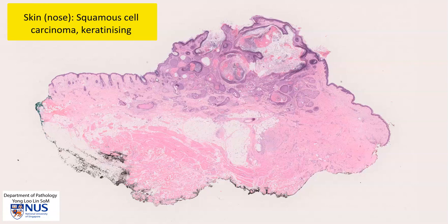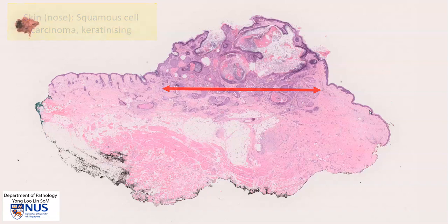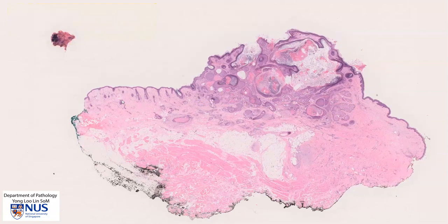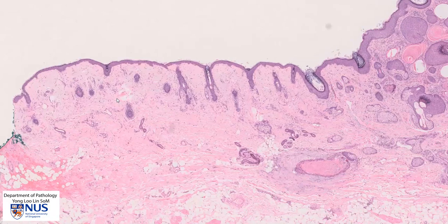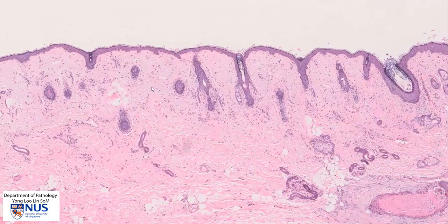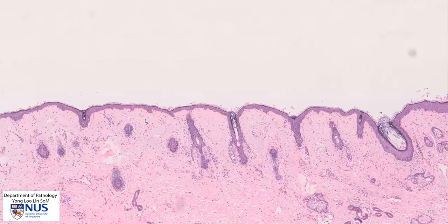The tumor actually extends from here to here, and on the right side we have some normal skin, similarly on the left side. So let's quickly orientate ourselves to the normal areas first.